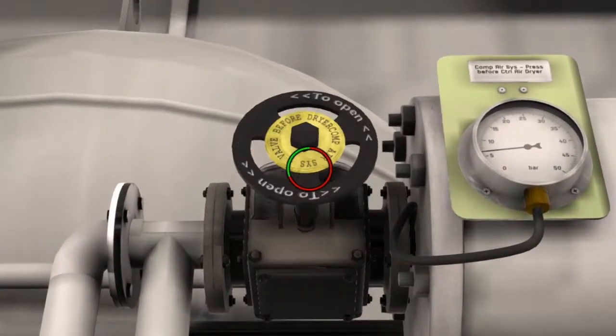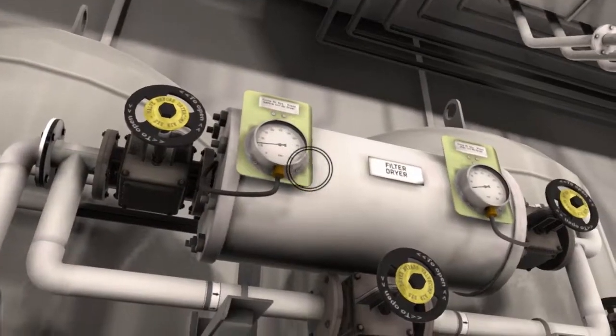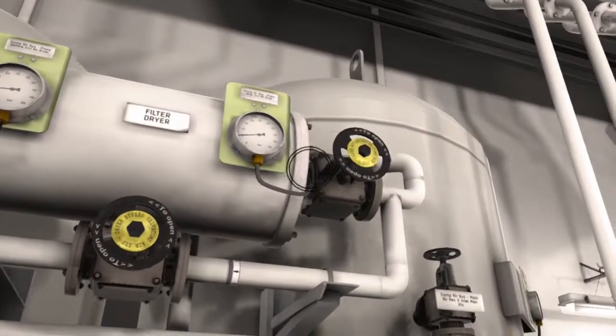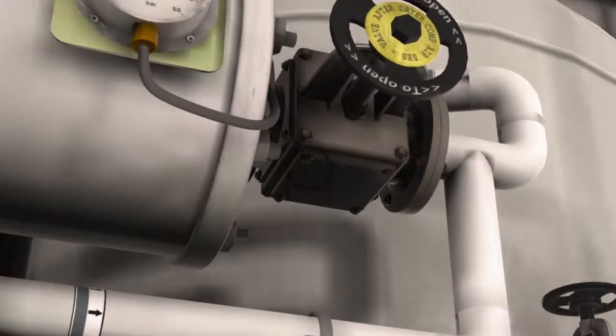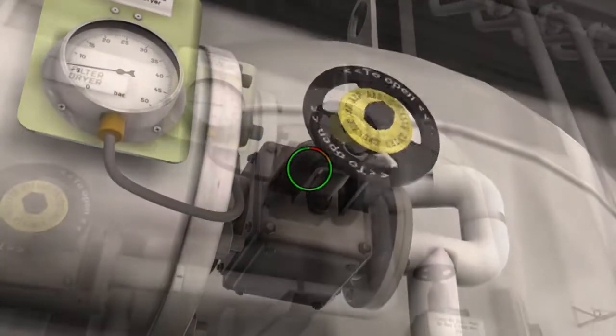To operate the air dryer, we have to open the inlet and outlet valves, then always check the pressure differences. This is to ensure when maintenance is being required. A bypass also is included in the system.